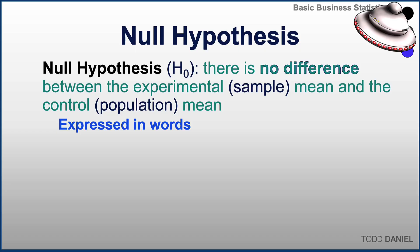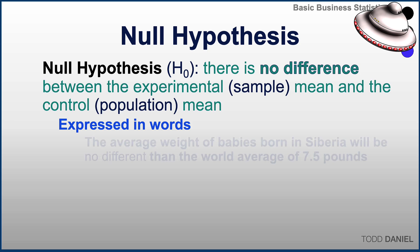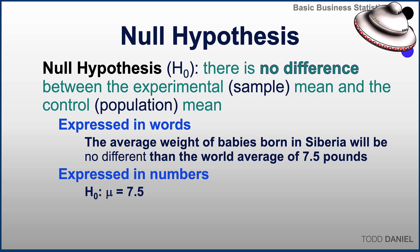Let's apply this with our baby weight example. The way we would word a null hypothesis would be: the average weight of babies born in Siberia will be no different than the world average of 7.5 pounds. We could also express this in numbers. The null hypothesis is always written as H sub zero colon. In this case, mu equals 7.5. We would read that as: this sample from Siberia is drawn from a population that has an average of 7.5.